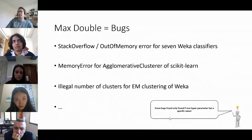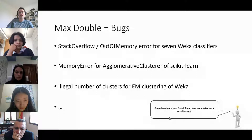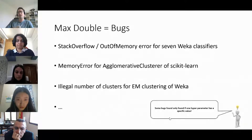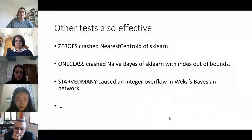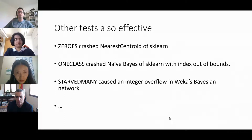We found bugs. By far the most efficient approach was showing data close to machine precision. We had stack overflows and out-of-memory errors in Weka, memory errors in scikit-learn, and illegal numbers of clusters in Weka — really severe errors that can crash all virtual machines. We also swept the hyper-parameters of these algorithms, and sometimes found bugs only for a single hyper-parameter setting among hundreds. Other tests were also quite effective: inputting all zeros crashed the nearest centroid classifier in scikit-learn, inputting data from a single class crashed Naive Bayes, and using many different categories crashed the Bayesian network in Weka.